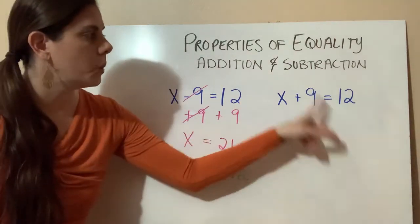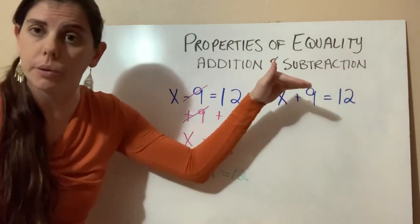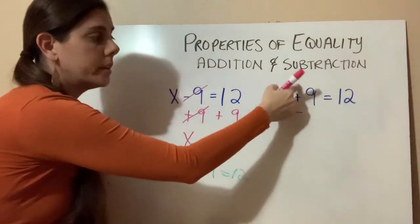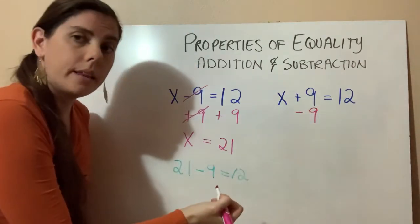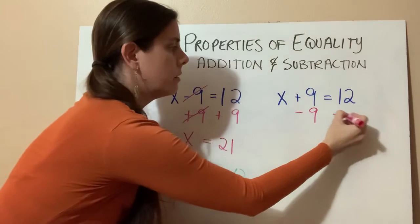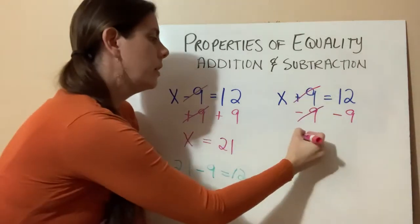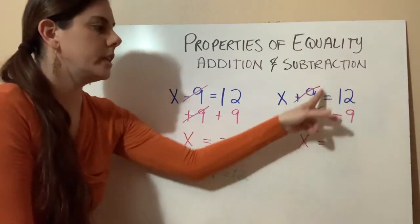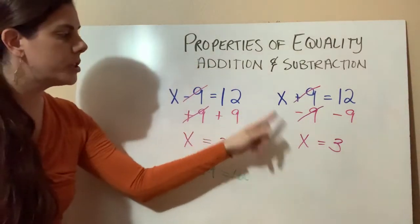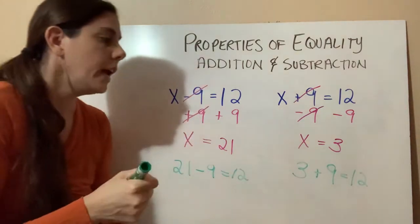Now for our other example, we're going to use the subtraction property of equality — same idea as addition, but we're subtracting from both sides instead. What are we going to subtract? We take the opposite of whatever is with x. Since we have a plus 9, we subtract 9 from both sides. 9 minus 9 equals 0, so x is by itself on one side. Then we perform the operation on the other side: 12 minus 9 equals 3. If we rewrite the original equation using x equals 3, we get 3 plus 9 equals 12, which is a true mathematical statement.